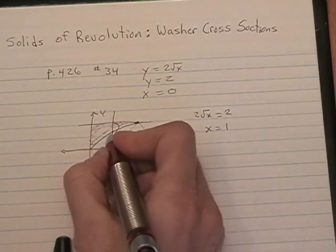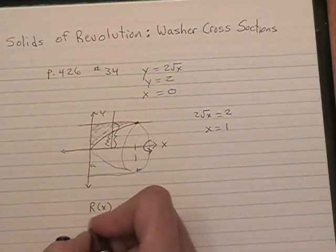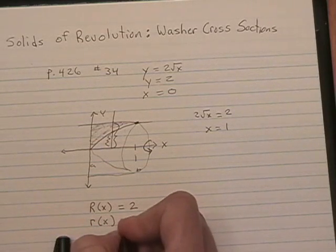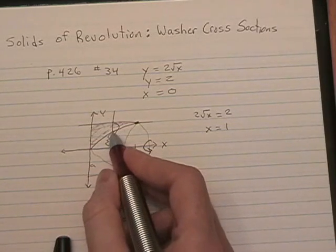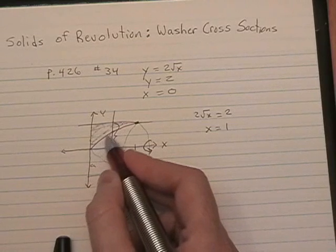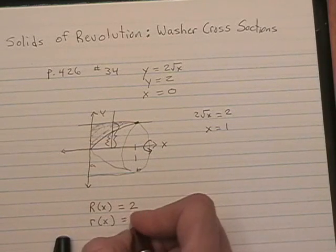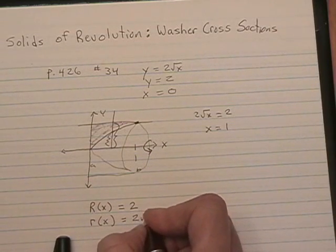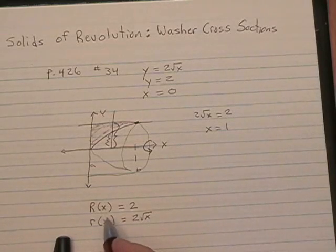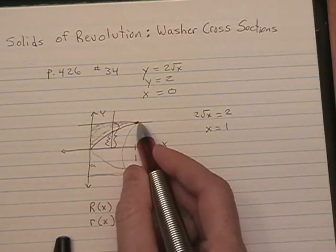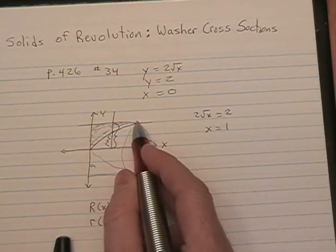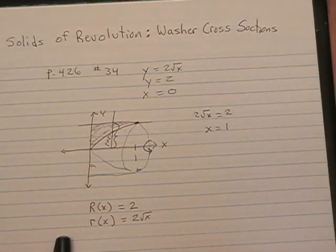The inner radius, this distance here, little r of x, is equal to y. And in this case, y is determined by 2 square root of x. So the inside radius is determined by 2 square root of x. The outside radius is determined by y equals 2.